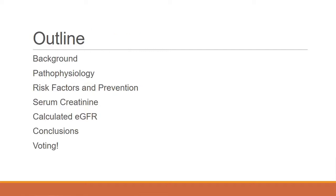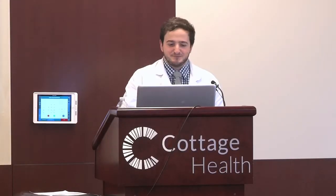A brief outline of what we're going to talk about: I'm going to give some background information on the topic and its relevance, briefly cover the pathophysiology, go over some of the risk factors which are very important for prevention, and then discuss data regarding serum creatinine as well as a different value, the calculated eGFR. Then we'll get into conclusions, and then you guys get to vote.